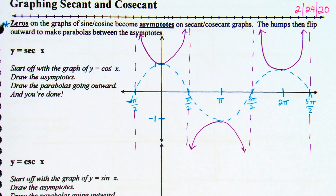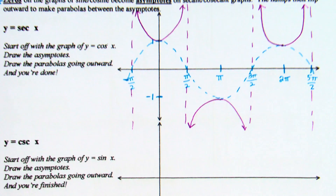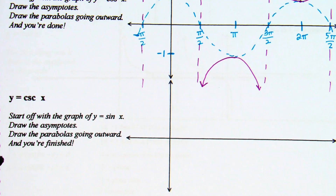So yesterday we graphed the secant graph. I asked you to be looking at and trying the cosecant graph. Cosecant — what do you think or know when you hear the word cosecant? It is the reciprocal of sine. So when you see cosecant, we have to think about graphing sine.